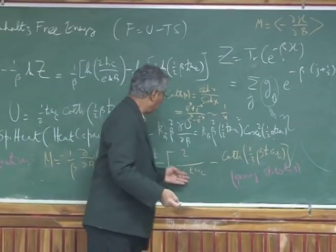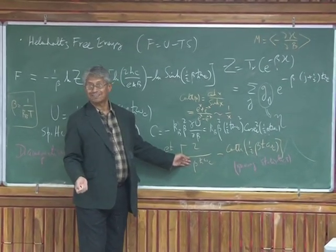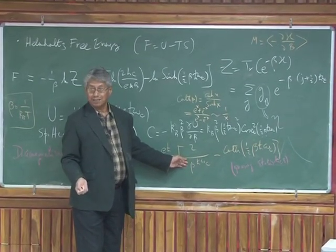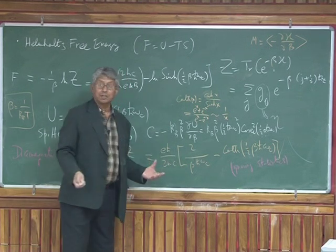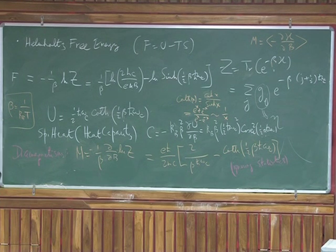So when temperature T is very high, you can replace the cotangent hyperbolic by its argument. 1 over the argument. And one of the argument is precisely this factor, and you have cancellation. It means that at very high temperature, the magnetization is identically equal to zero. And that's called the theorem, actually.